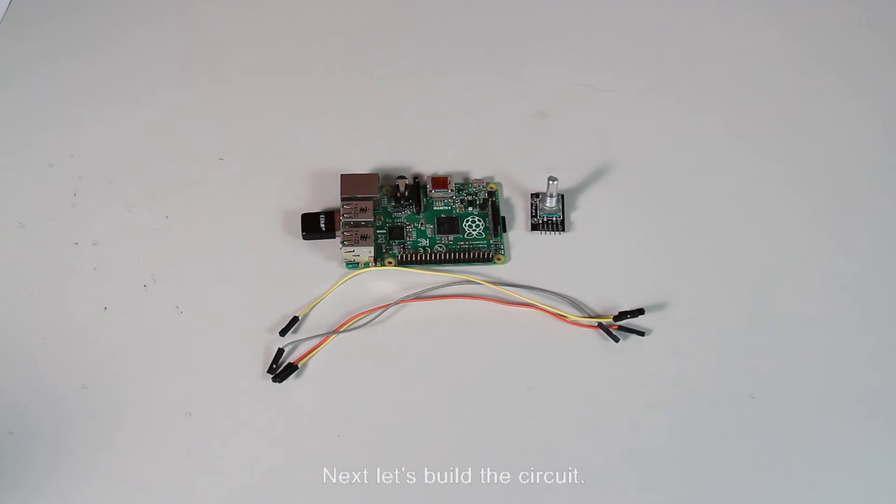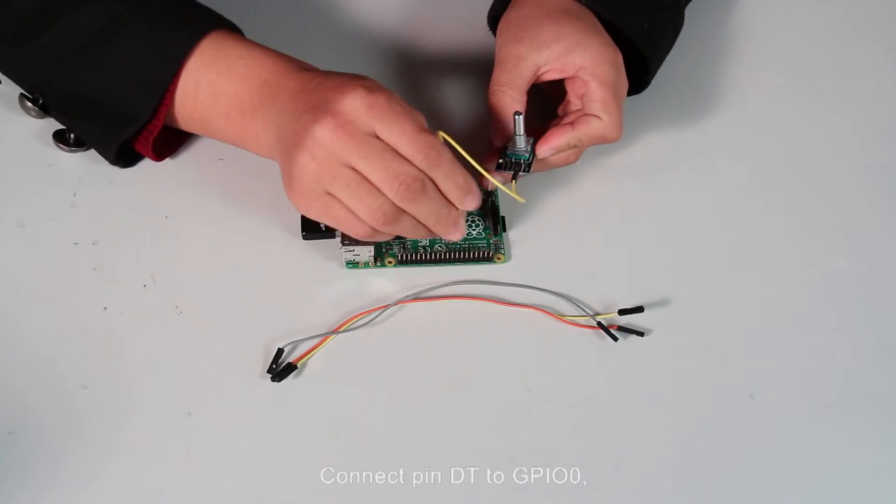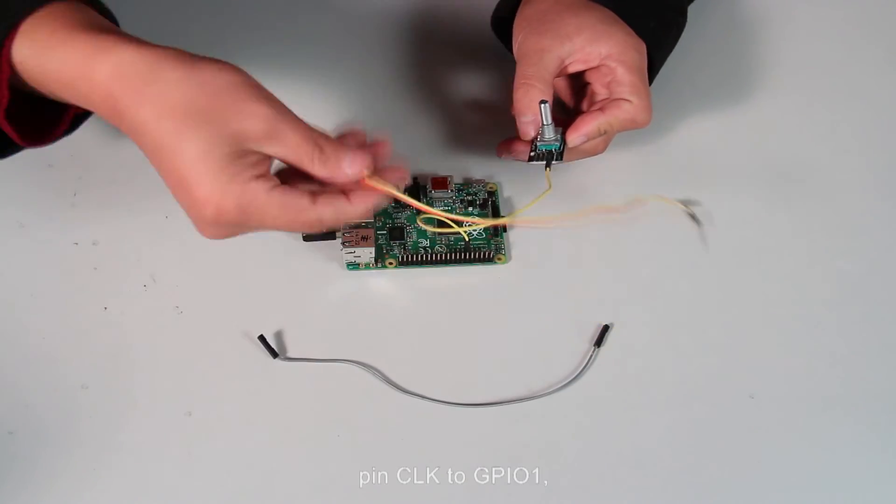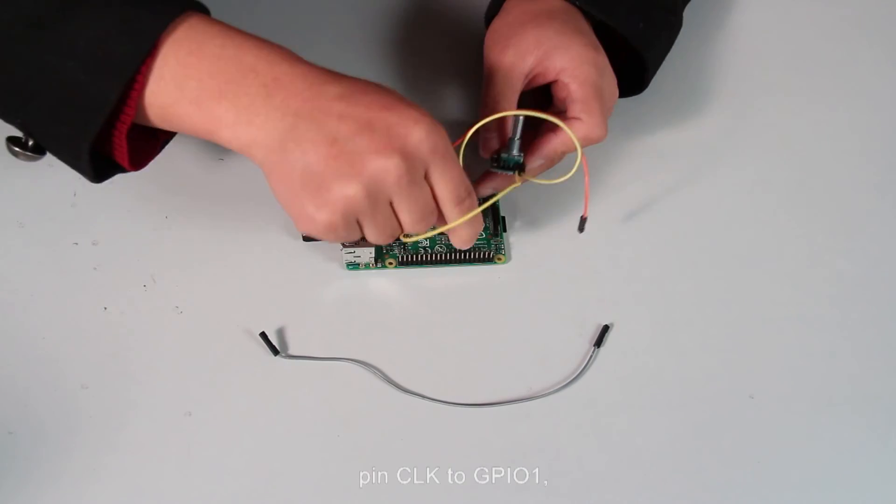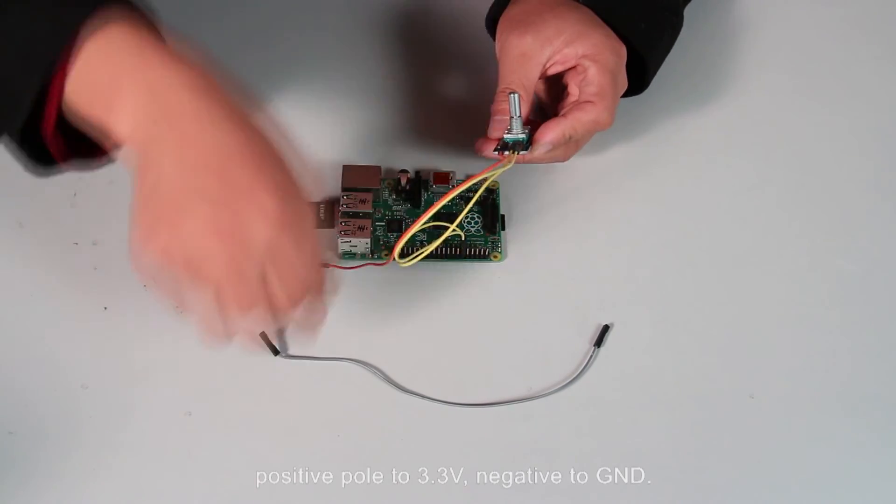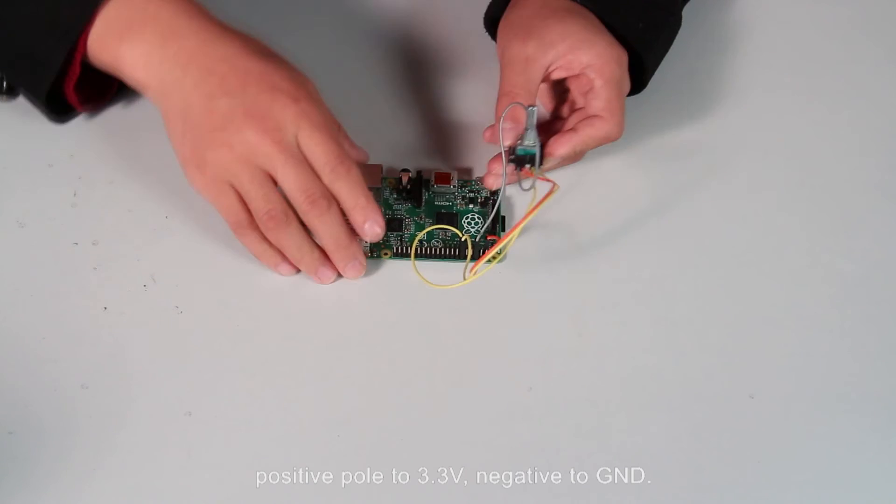Next, let's build the circuit. Connect pin DT to GPIO0, pin CLK to GPIO1, positive power to 3.3 volts, and negative to ground.